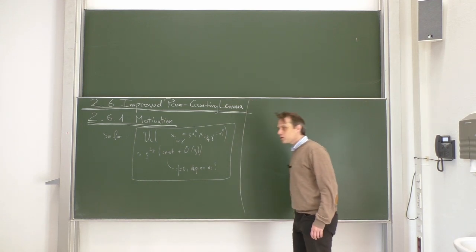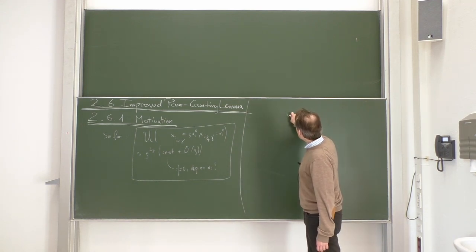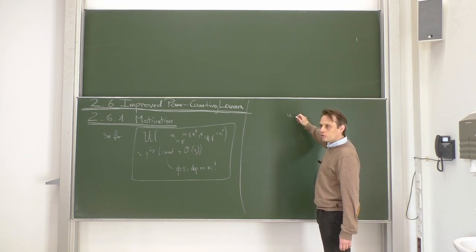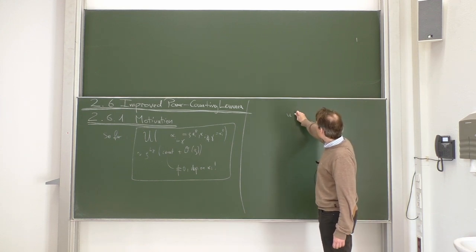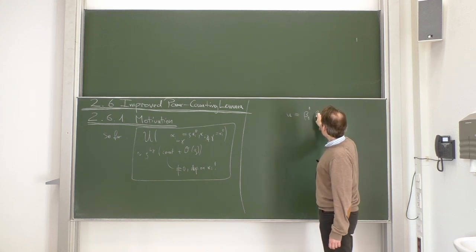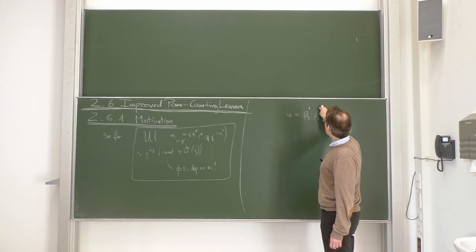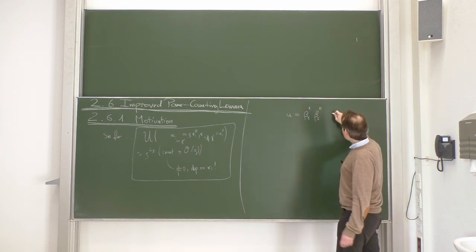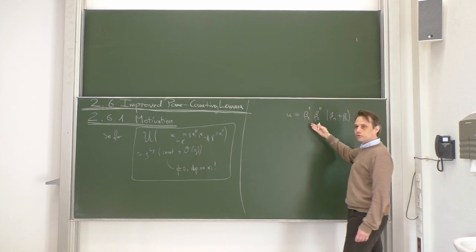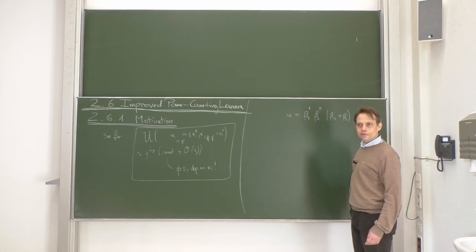Let me give you an example. Let's consider a simple function — let's call it small u for simplicity. Let's say u = β₁¹ · β₂⁰ · (β₁ + β₂). This is a simple function.